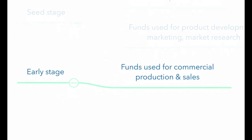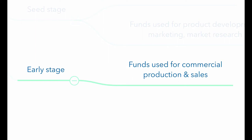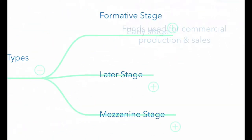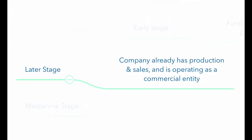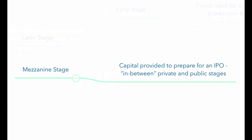Early stage financing is provided to companies moving towards operations but before commercial production and sales have occurred. Later stage financing, or expansion venture capital, is provided after commercial production and sales have begun but before an IPO, typically used for expansion of production or an expanded marketing campaign. Finally, mezzanine stage financing refers to capital provided to prepare to go public — the term mezzanine here refers to the timing, with the company being between a private company stage and a public company stage through an IPO.